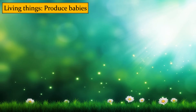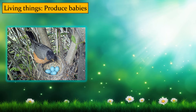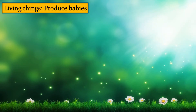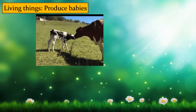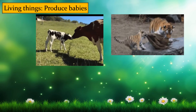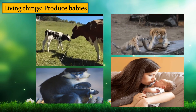Living things can produce babies. For example, a bird lays an egg in the nest and later on a young one comes out of the egg and grows into an adult. A cow gives birth to a calf, a tiger gives birth to a cub, and monkeys and women give birth to an infant.